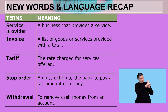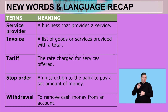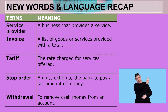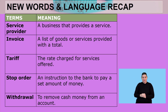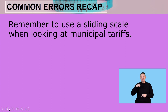Service provider: a business that provides a service. Invoice: a list of goods or services provided with a total. Tariff: the rate charged for services offered — again, municipal tariffs. Stop order: an instruction to the bank to pay a fixed amount of money. Withdrawal: to remove cash from an account.